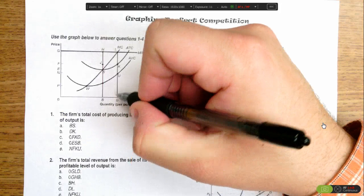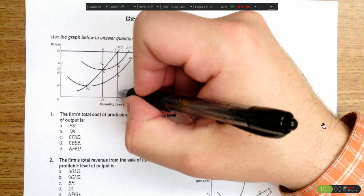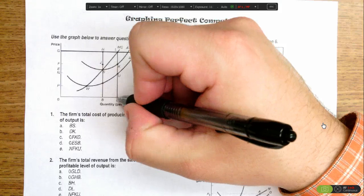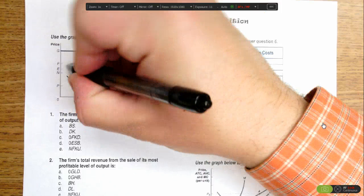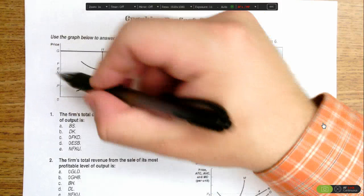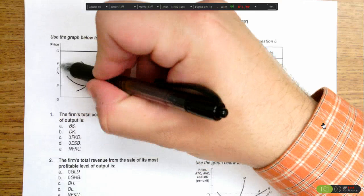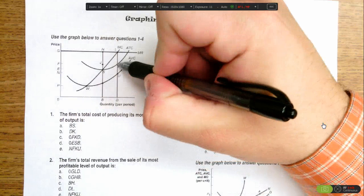To find total costs, we need to find what the average total cost is at this quantity D. So we go up till we hit the ATC curve, and then across, and we find that this area of cost is defined by 0 F K D.